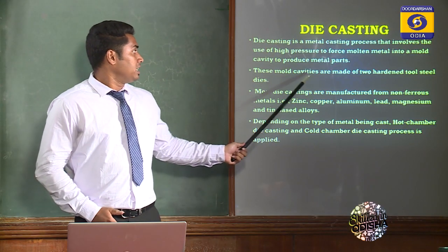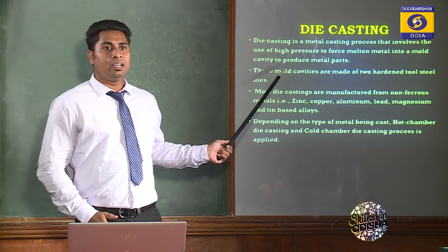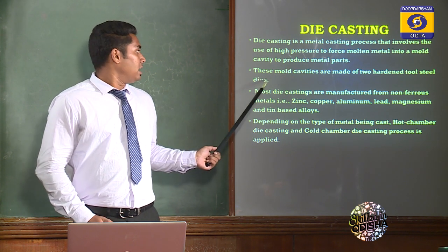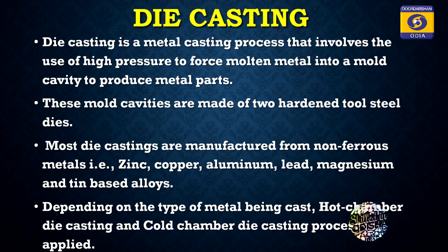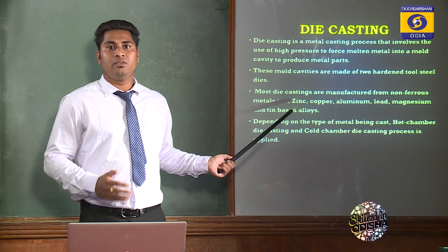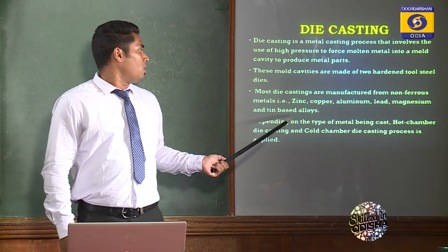In this process, the mold is made by two hardened tool steel dies — one is a movable half and another is a fixed half. This process is used for producing non-ferrous metal casting products such as zinc, copper, aluminium, lead, magnesium, and tin-based alloys.